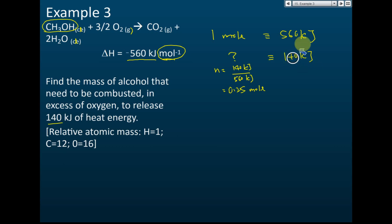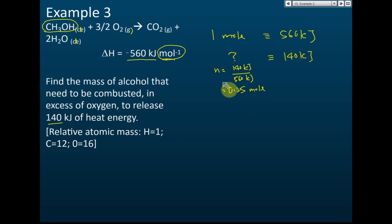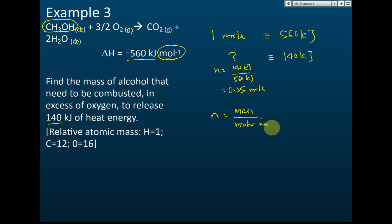Since the amount of heat released is less than 560 kJ, the number of moles must also be less. So the number of moles is 140 divided by 560, which is 0.25 moles. Now that we have the number of moles of alcohol, we can find the mass using: number of moles = mass divided by molar mass.